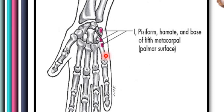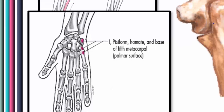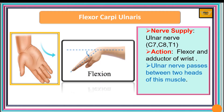The flexor carpi ulnaris is supplied by the ulnar nerve, and its actions are flexion and adduction of the wrist. Here we are seeing flexion of the wrist and ulnar adduction of the wrist. Notably, flexor carpi ulnaris is the next muscle to have a nerve passing between its two heads — this time it is the ulnar nerve. The last we mentioned was the median nerve passing between the two heads of pronator teres. So we are now seeing the ulnar nerve passing between the two heads of flexor carpi ulnaris.